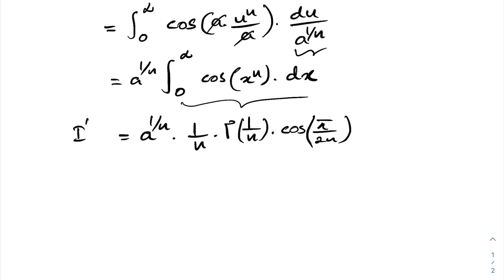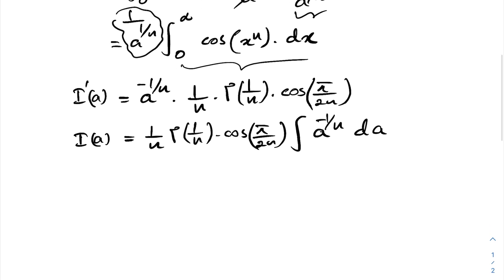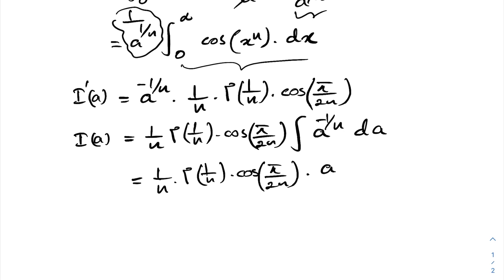So I'(a) equals (1/a^(1/n)) · (1/n) · Γ(1/n) · cos(π/(2n)). Now integrating with respect to a, and taking the constants outside the integral, we integrate a^(−1/n) with respect to a, giving a^(1 − 1/n) / (1 − 1/n), plus a constant C.